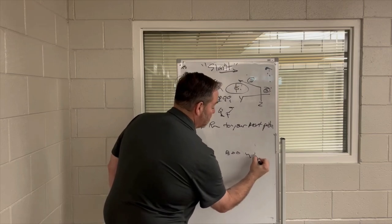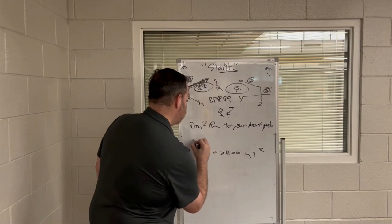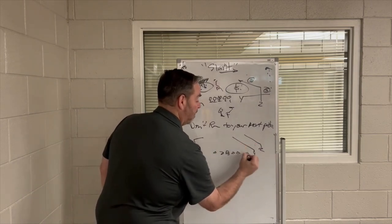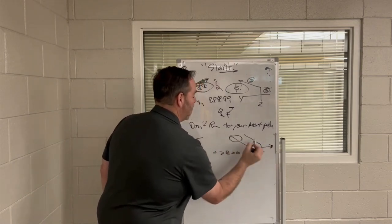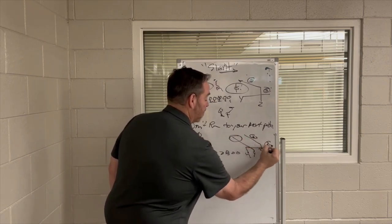In three by one, we do the same thing, except we're going to run a double slant on the strong side, and we'll read slant, slant, shoot. We never throw that backside route. I don't think we've ever thrown that. We have it in there, but we never throw it.